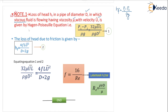Please remember the Hagen-Poiseuille equation: P1-P2 by rho g equals 32 mu u bar L by rho g D square. We already seen this equation. Loss of head HF in a pipe of diameter D in which viscous fluid is flowing having viscosity mu with average velocity u bar is given by the Hagen-Poiseuille equation.